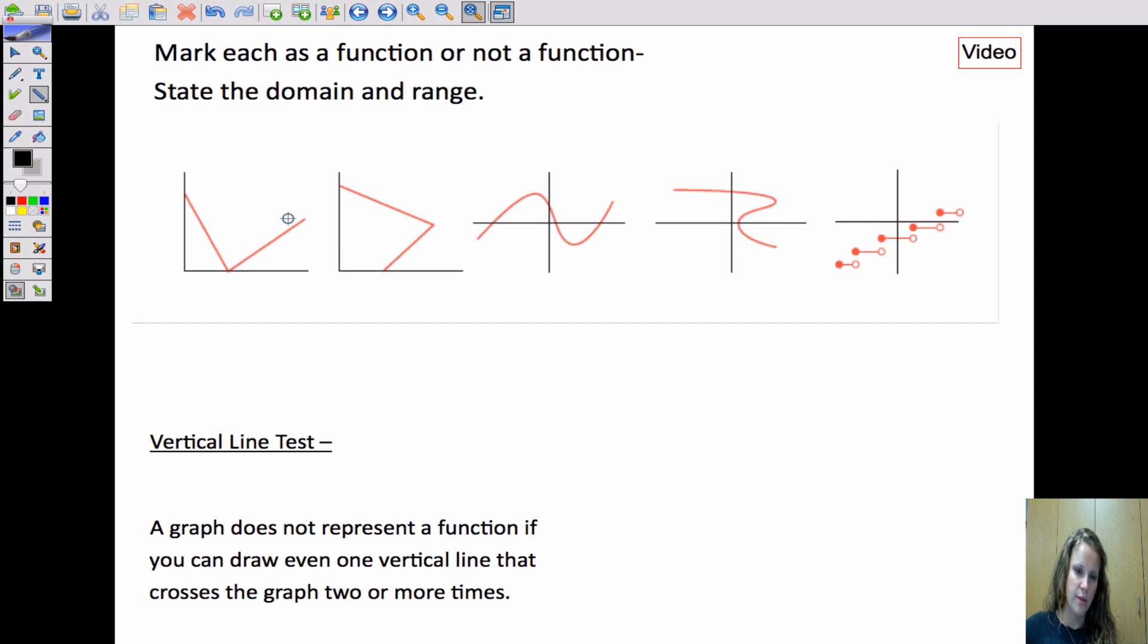So these, in graphs, it's much easier because you can use what's called the vertical line test. If a graph does not represent a function, if you can draw a vertical line through it and have that line touch more than one y at the same time. So this one passes function, this one not a function. So here we'll write function, not a function.